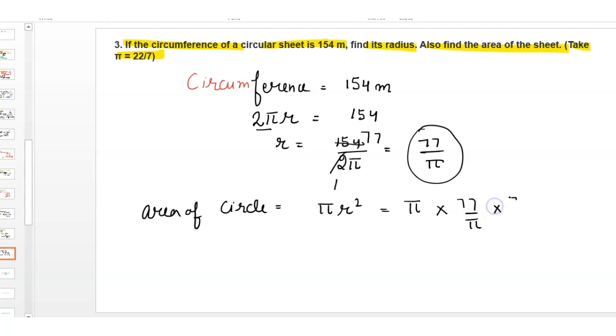Then we write it two times. π is canceled out with this. Then here 77 times 77.